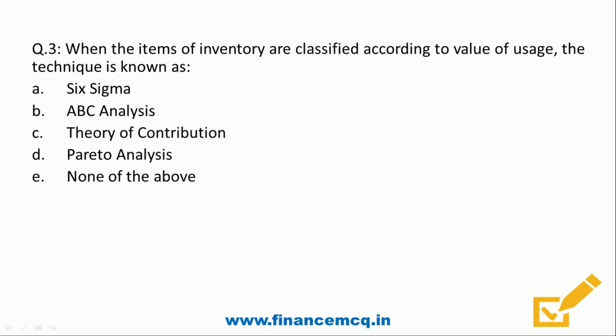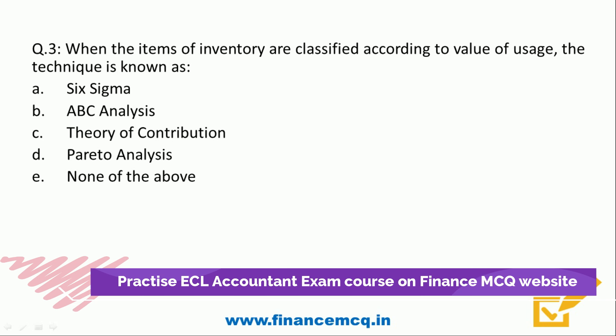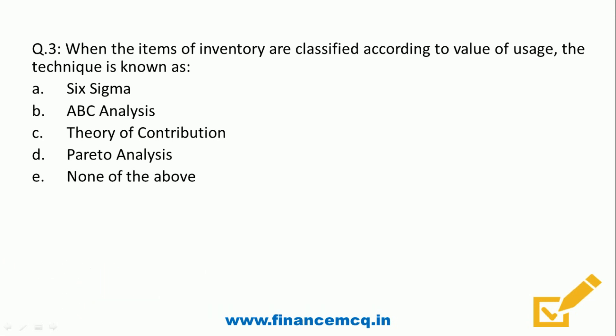Question 3: When the items of inventories are classified according to the value of usage, the technique is known as: A) Six Sigma, B) ABC Analysis, C) Theory of Contribution, D) Pareto Analysis, E) None of the above. We are talking about classification of inventory based on value of usage, so the correct answer is Option B, ABC Analysis.